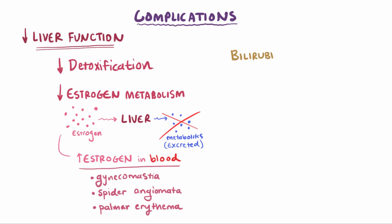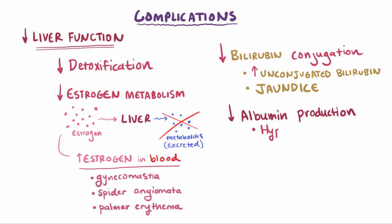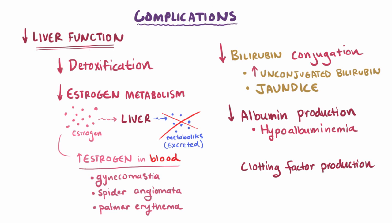Since the liver usually conjugates bilirubin, there will be increased unconjugated bilirubin in the blood from a less functional liver, and that can lead to jaundice. Another important job of the liver is producing albumin, so if the liver is not functioning right, you can have a decreased amount of albumin in the blood, or hypoalbuminemia. Finally, the liver helps in making clotting factors — proteins that help coagulate your blood — so when you aren't producing these coagulation factors, you can develop issues with your ability to coagulate blood, which you need in order to stop blood loss after an injury.